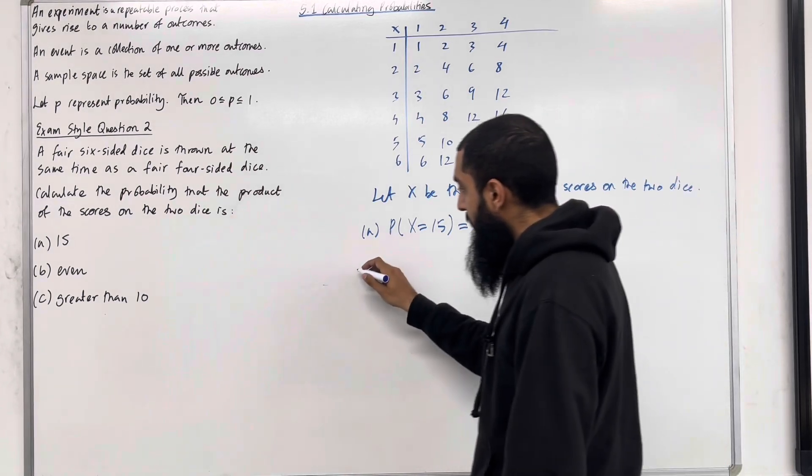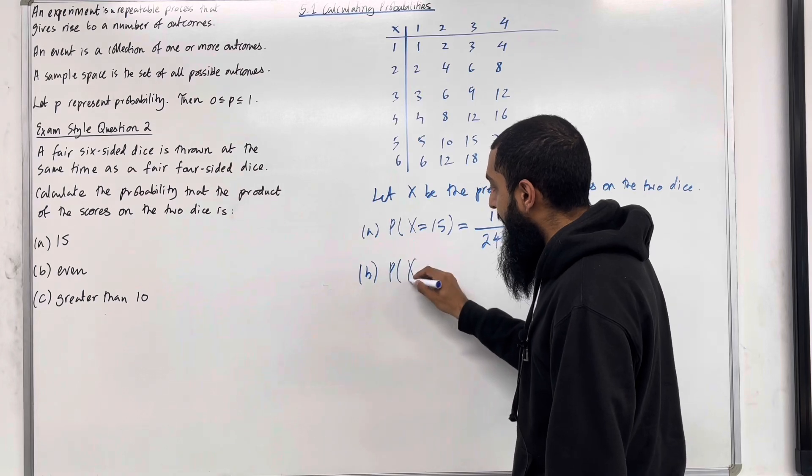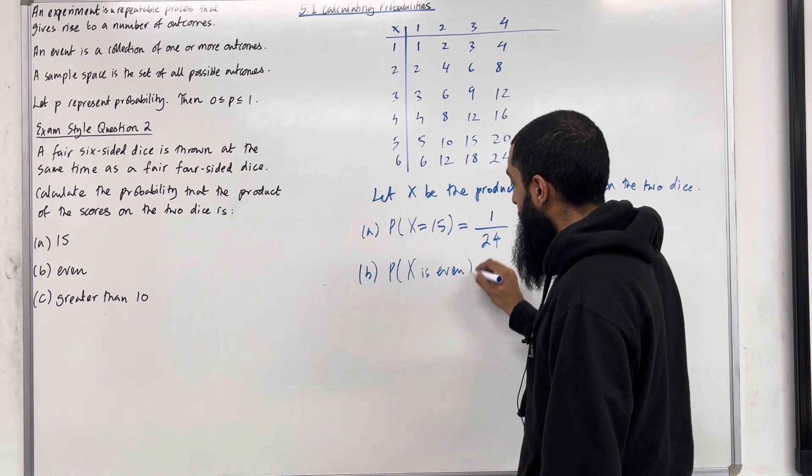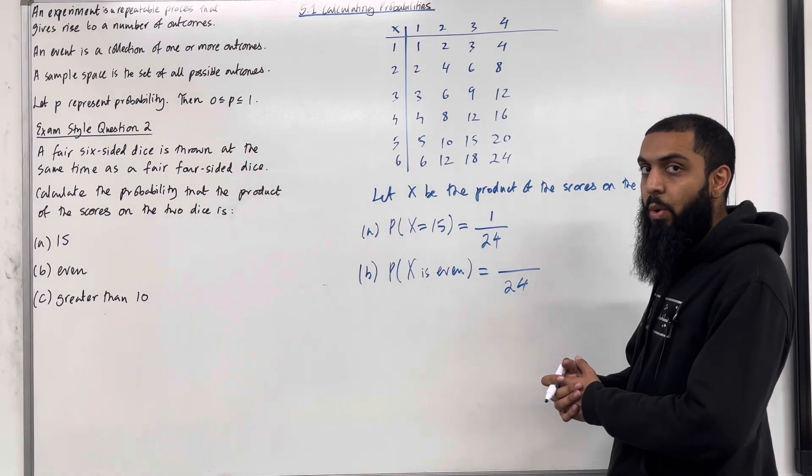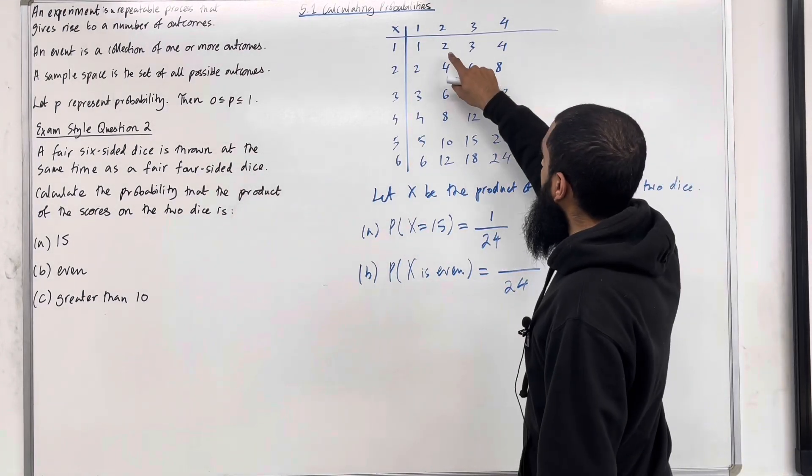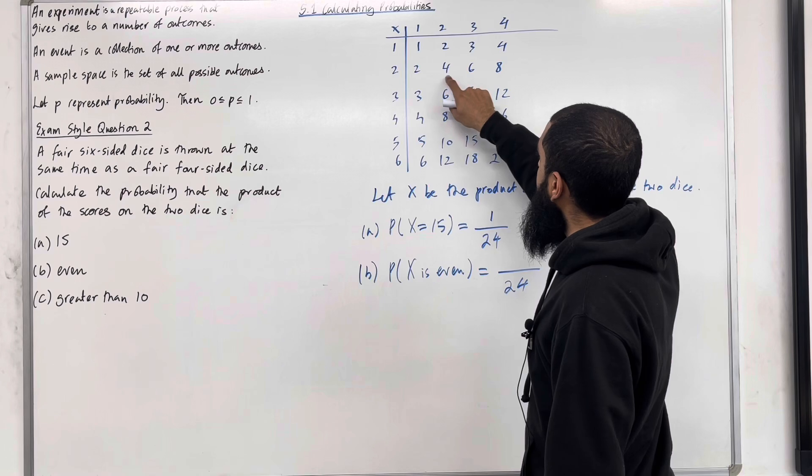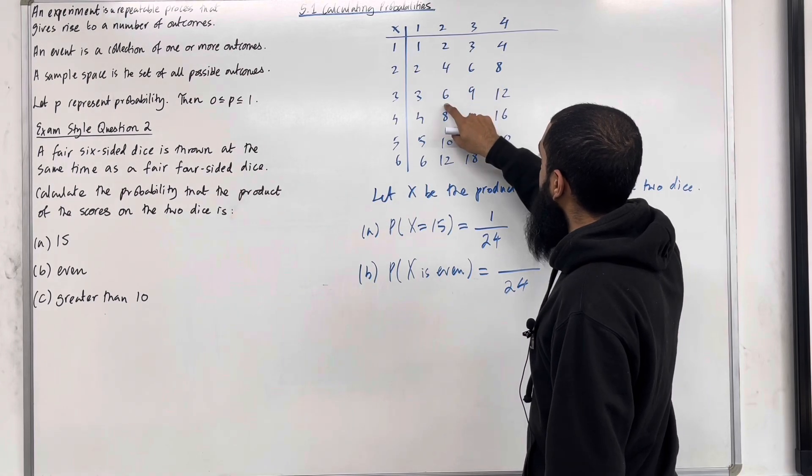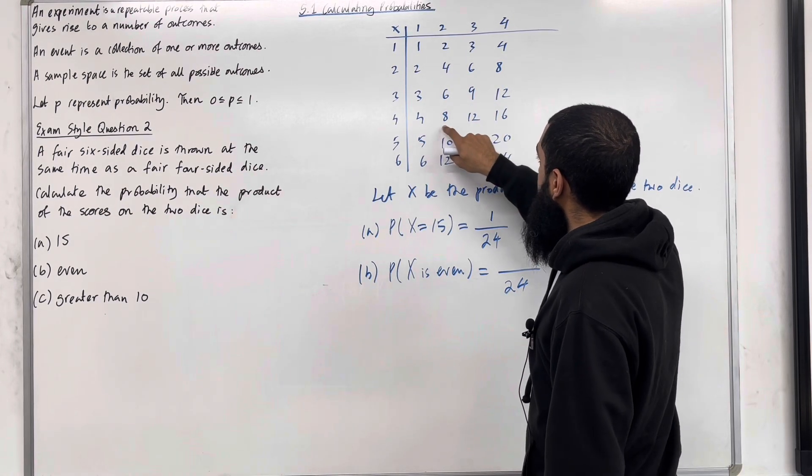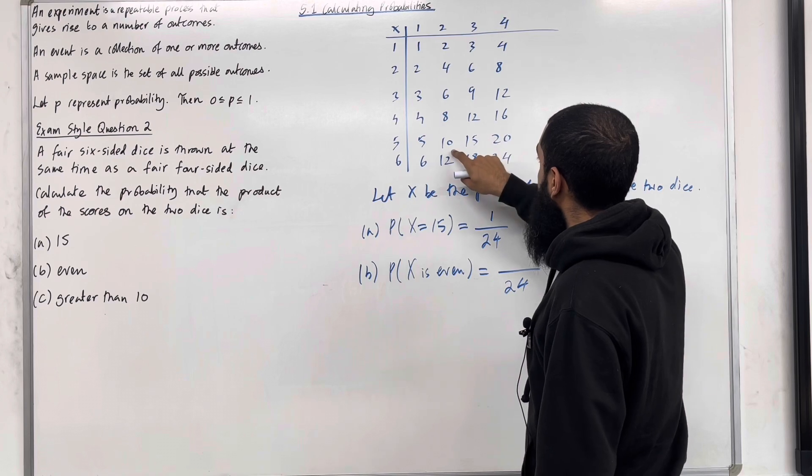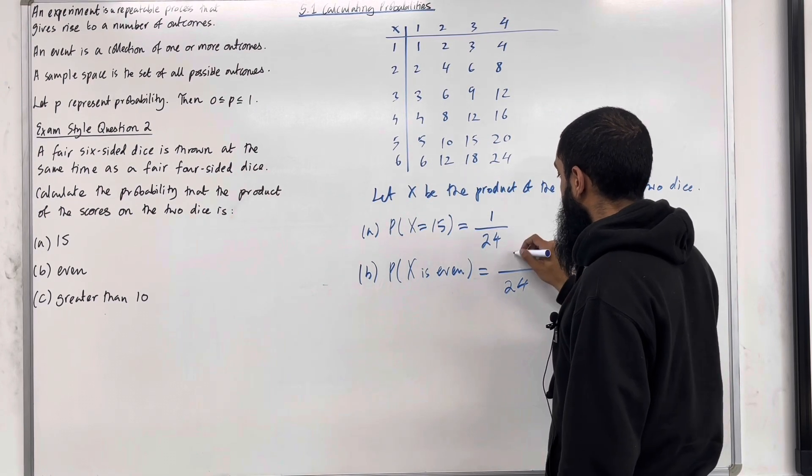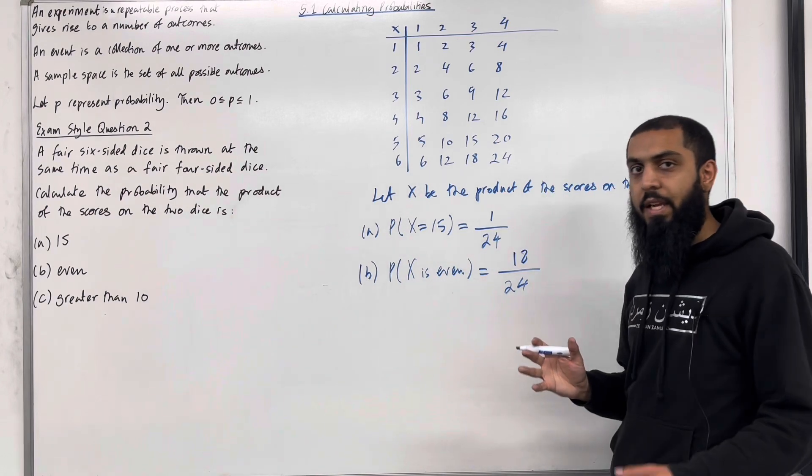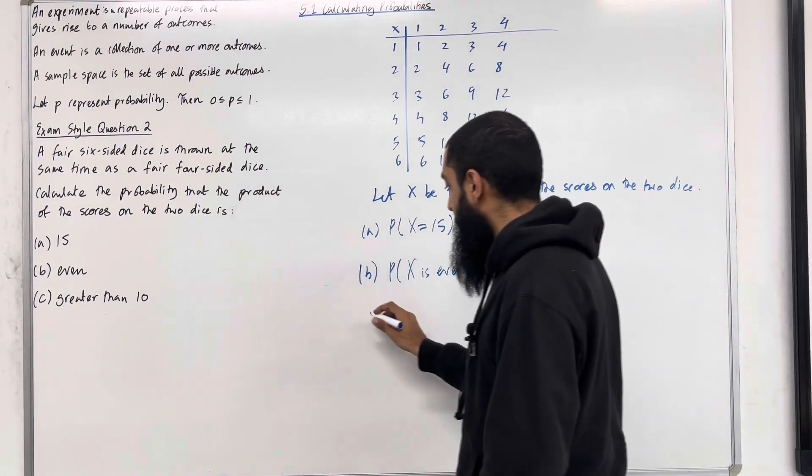In part B, we want the probability that X is even. Again, the probability is out of 24. How many even outcomes do we have? Let's have a look. 1, 2, 3, 4, 5, 6, 7, 8, 9, 10, 11, 12, 13, 14, 15, 16, 17, 18. Hence, the probability is 18 out of 24.